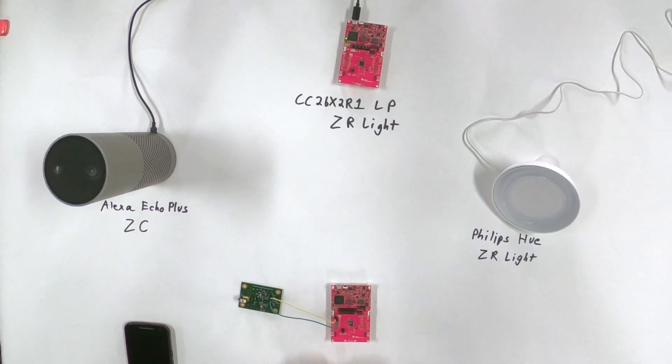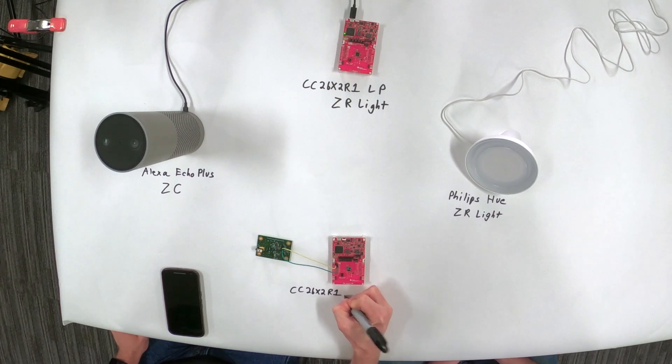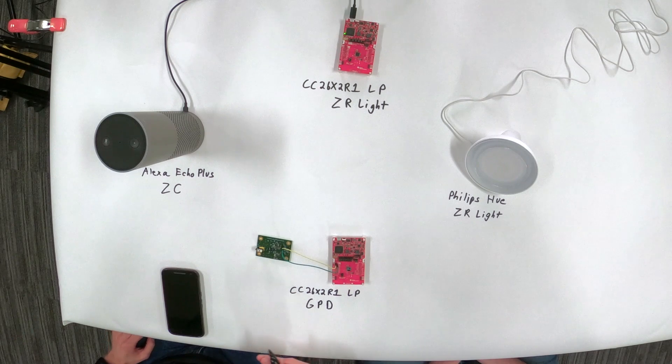And down here, we have another 26X2R1 launch pad. And this is going to be a green power device or GPD for short. Okay.